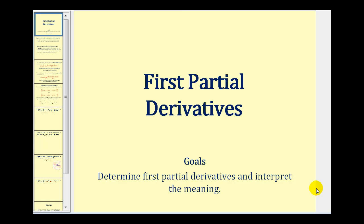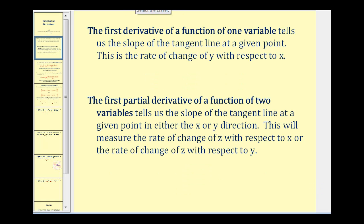Welcome to a video on first partial derivatives. Let's start with a quick review. The first derivative of a function of one variable tells us the slope of the tangent line at a given point. This is the rate of change of y with respect to x.